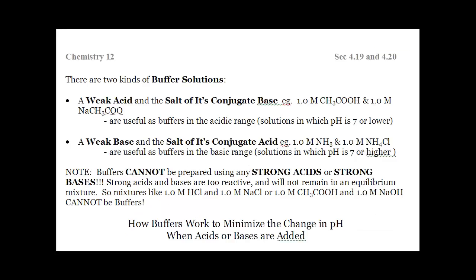Understand that there are two kinds of buffers. You can start off with a weak acid and add its conjugate base, or you can start off with a weak base and add its conjugate acid. If you start off with a weak acid, you're going to be able to buffer in the ranges of maybe 3 to 6 — that's the acidic side of the pH scale. If you're starting with a weak base, you're going to buffer in the pH range of maybe 7 to 8 to 11, the basic region. You cannot make a buffer with strong acids and strong bases because they do not form an equilibrium — they ionize 100%. So you can only make a buffer with a weak acid and its conjugate base, or a weak base and its conjugate acid.